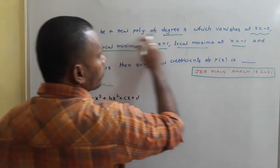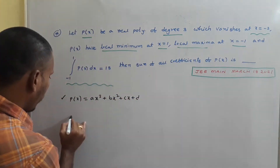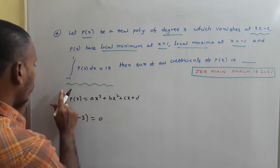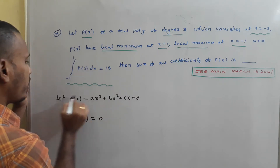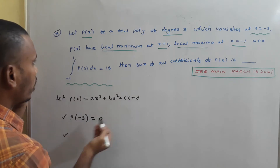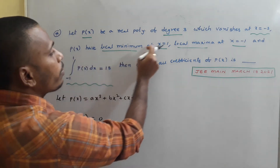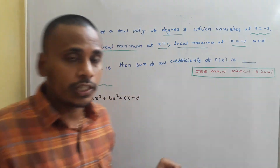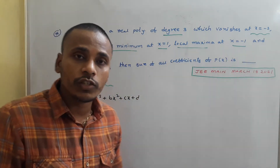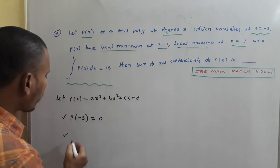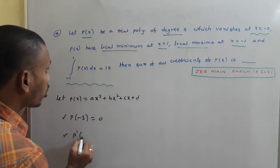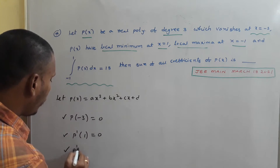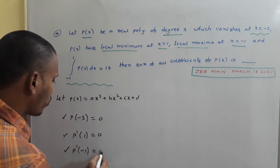The first condition is that the polynomial vanishes at x = -3, so P(-3) = 0. Since P(x) has local minima at x = 1 and local maxima at x = -1, these are critical points. Therefore P'(1) = 0 and P'(-1) = 0.